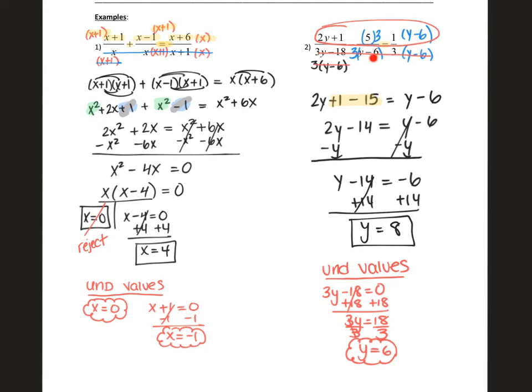So six is my first undefined value. Then I have y - 6 is my second denominator. So y - 6 equals zero. Add six to both sides. My undefined value is six. And then the last denominator is this three right here. And if I set three equal to zero, that kind of makes no sense. So we just reject it.